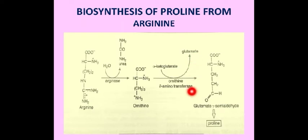This glutamate-gamma-semialdehyde then cyclizes to form pyrroline-5-carboxylate, which is then reduced to form proline. Thus, proline is synthesized from arginine.